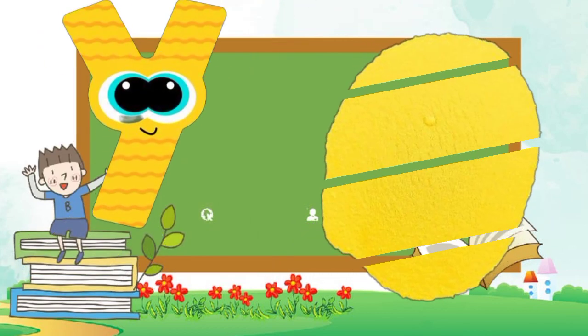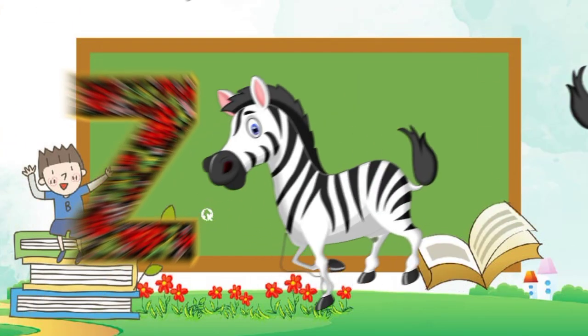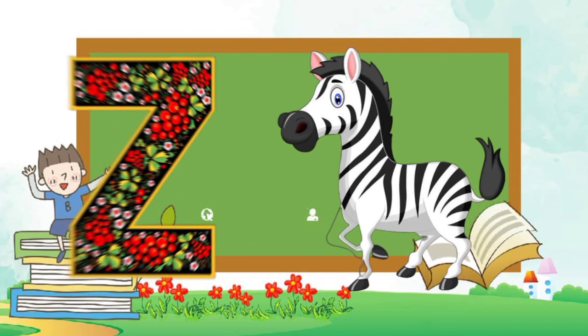Y is for yellow, y-y-yellow. Z is for zebra, z-z-zebra.